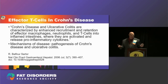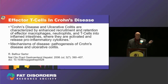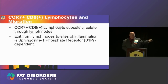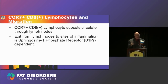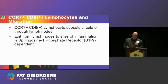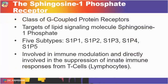Crohn's disease and ulcerative colitis are chronic inflammatory bowel diseases in which there is enhanced recruitment and retention of both macrophages and T cells, which then release pro-inflammatory cytokines in the intestinal tract. The CCR7-positive CD8-positive lymphocytes are present in adipose tissue inflammation, and their exit from the lymph nodes into the bloodstream and to sites of inflammation depends upon what's called the sphingosine-1 phosphate receptor.